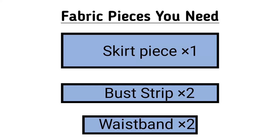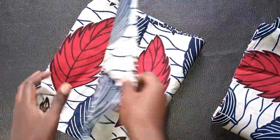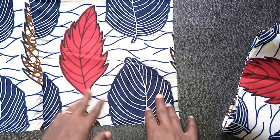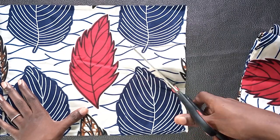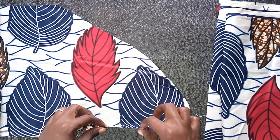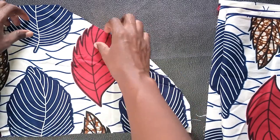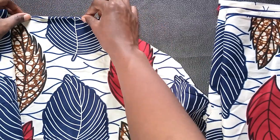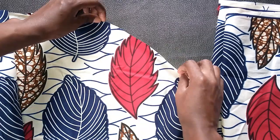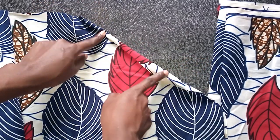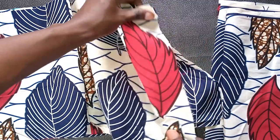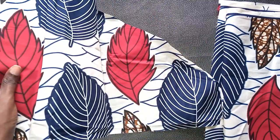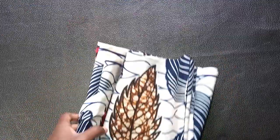The first thing we want to do is modify our bust strip. Take that rectangle and cut half of one end at an angle so you have a nice tapered end. Then hem that rectangle on both the long sides and also the tapered end. We are going to leave the straight edge opposite the tapered end unhemmed because we are going to be joining that to the waistband. Do that for both bust strips.